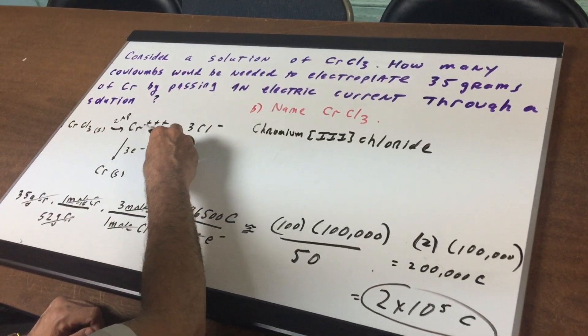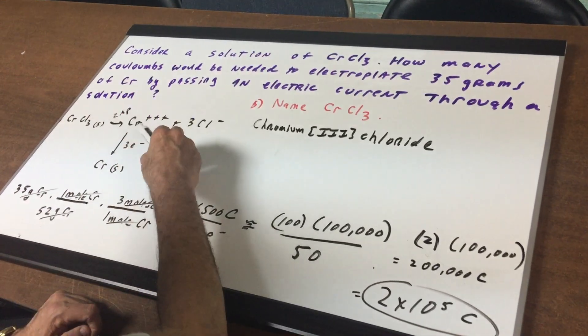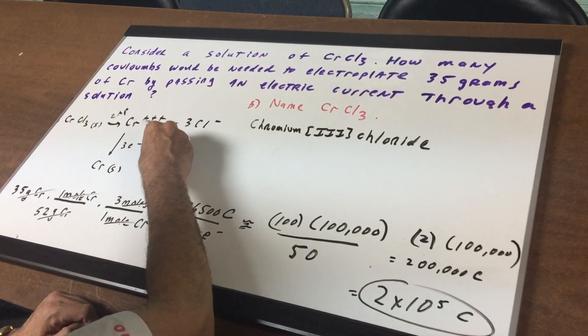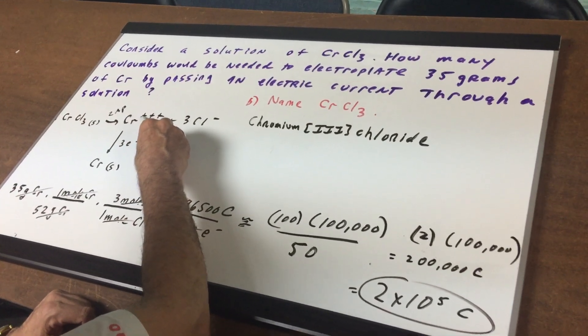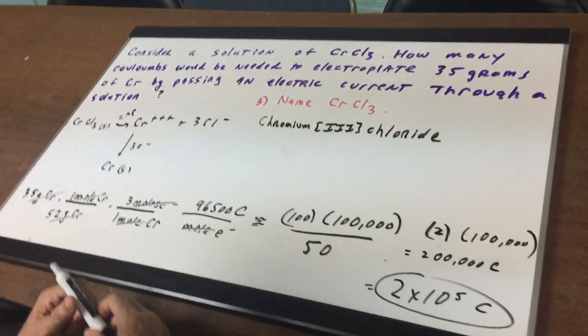And then, as you can see, we want to make chromium metal, so you need 3 electrons to reduce chromium plus 3 to metallic chromium.